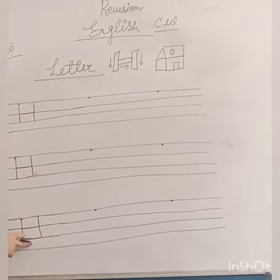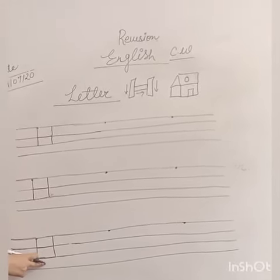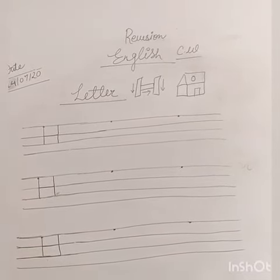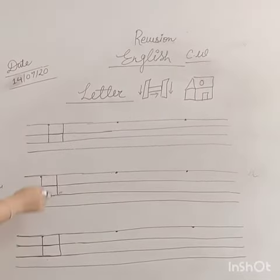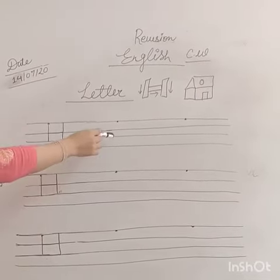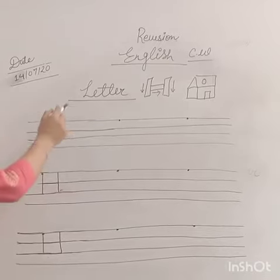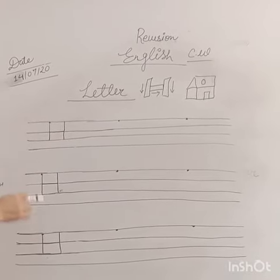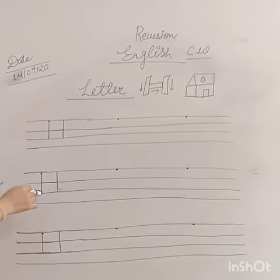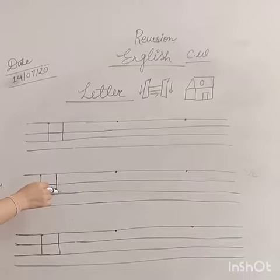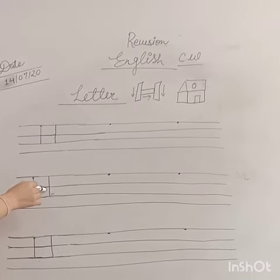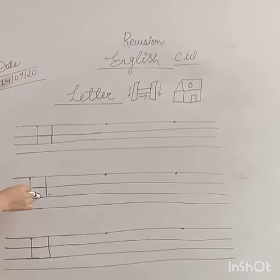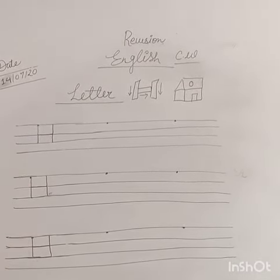So kids, now you will tell me which letter is this? This is letter H. H for house. So kids, this way you will write the letter H properly. Do remember: standing line, standing line, and sleeping line make the letter H. Thank you, see you soon.